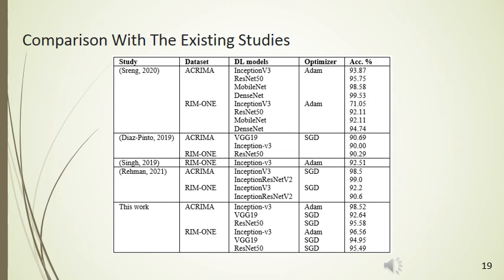However, from the existing studies, Sring and others showed the highest accuracy of 99.53%, and the major drawback of their research is that they only identified the class imbalance in the RIM1 dataset but did not resolve it during their research.